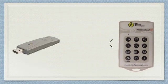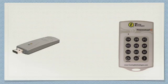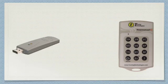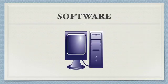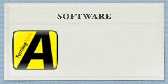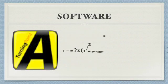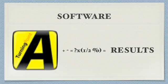When the student types in their response into their response card, the response card sends a radio signal, which is received by the RF receiver plugged into the instructor's computer. The instructor's computer then uses software to tabulate the poll results.